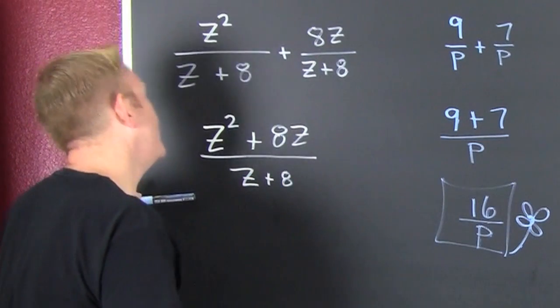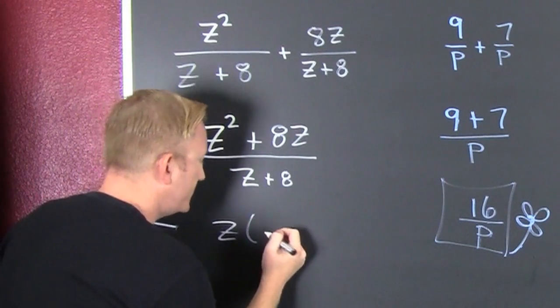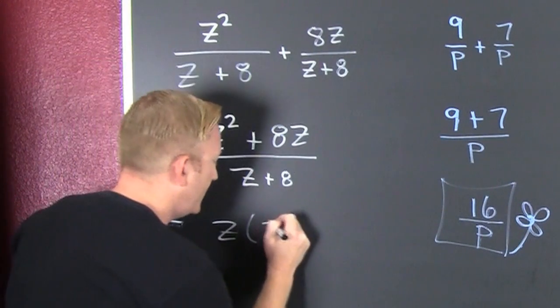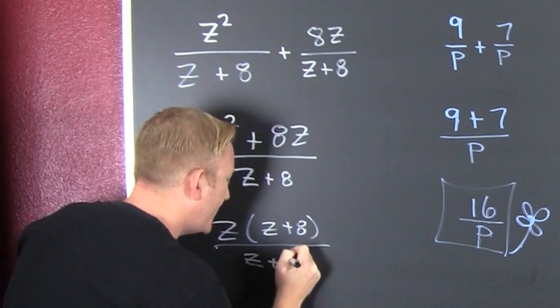Wait. We can factor and maybe reduce. So we deduce that we can pull Z out: Z times Z plus 8. That's all over Z plus 8.